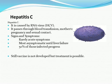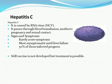Hepatitis C virus, shown in this figure, is an RNA virus. It is passed through blood transfusion, from mother to child through the placenta during pregnancy, through breast milk feeding, and through sexual contact. Symptoms of hepatitis C are rarely acute; most cases are asymptomatic until liver failure. There are no symptoms until the liver has failed. About 50% of those infected progress to chronic disease. A vaccine is still not developed, but treatment of hepatitis C is possible.